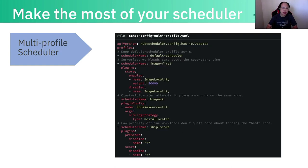So what is the community direction? The community direction is to use a multi-profile scheduler. A multi-profile scheduler is still one scheduler, but inside it you can define different profiles. Each profile you can think of as a sub-scheduler, because it has its own set of scheduling policies including which weights, which plugins, and which plugin arguments.